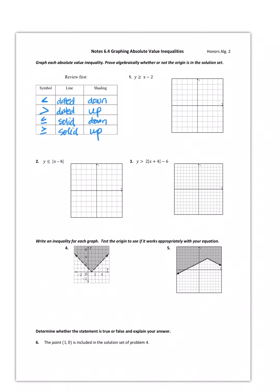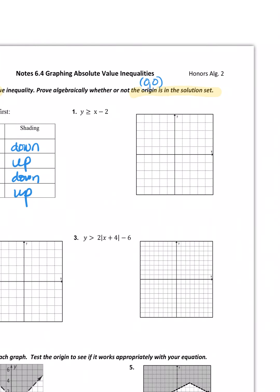Today we're going to graph an absolute value inequality and prove algebraically whether or not the origin is in the solution set. The origin is the point (0, 0) — we're just going to check if it's in the solution set. This equation is already in graphing mode, almost slope-intercept form. Our y-intercept is at negative two, and it has a slope of one.